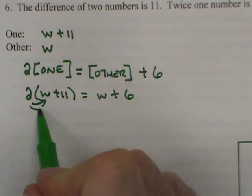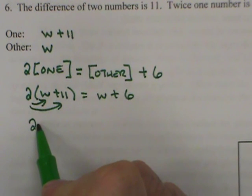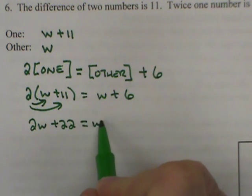I'll distribute. As I distribute, we can say two W plus 22 equals W plus six.